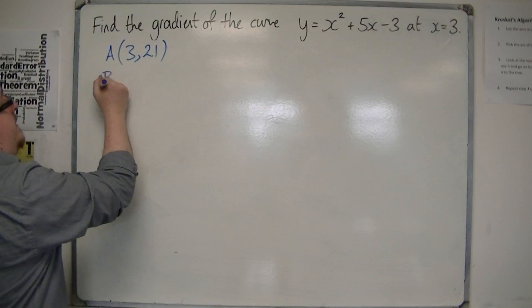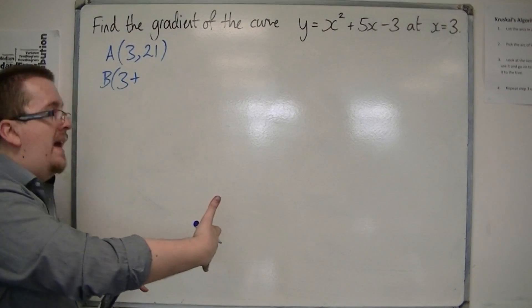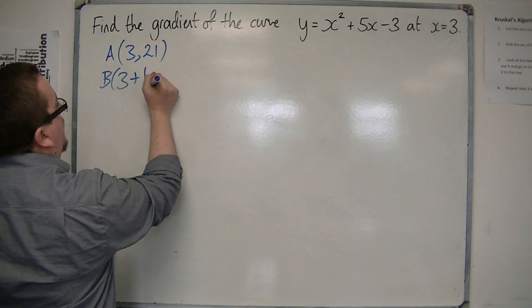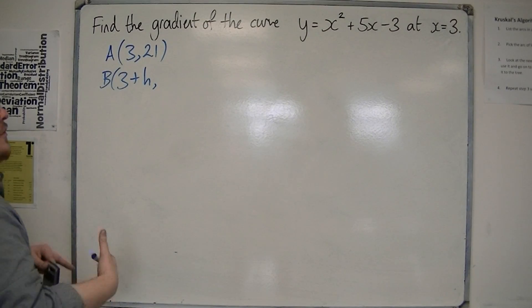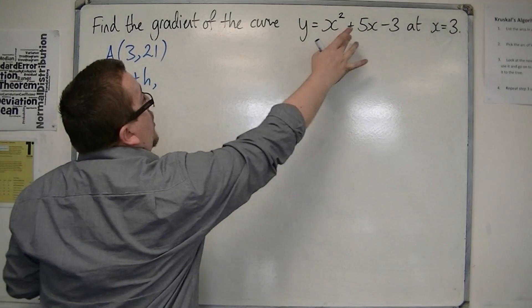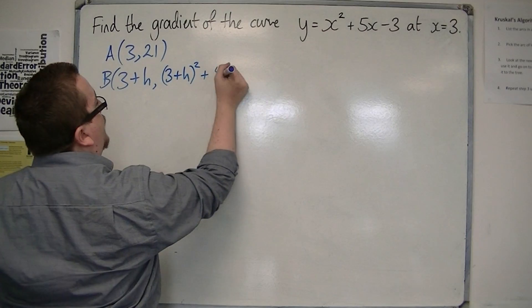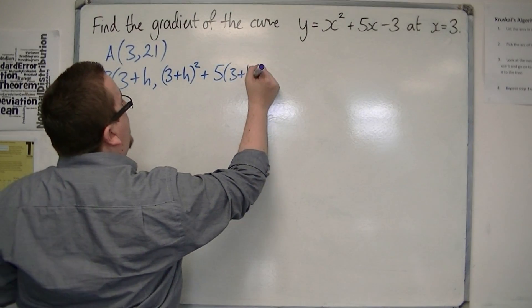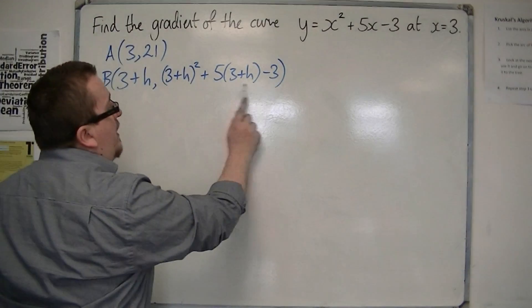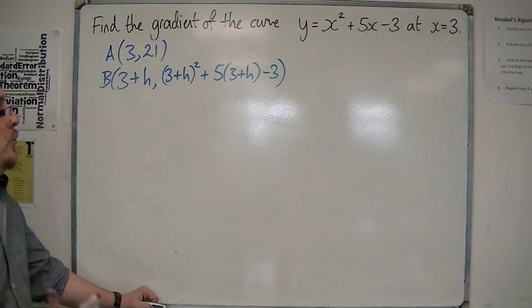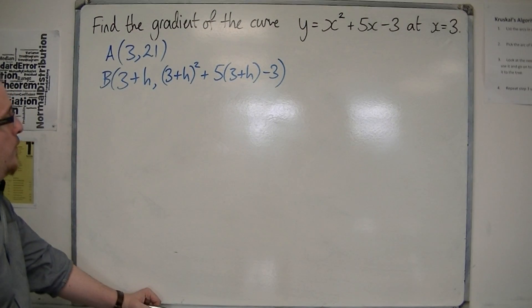The second coordinate, B, will be a little distance away from that x-coordinate of 3, so let's call that h. So we need to find the y-coordinate of B. So the y-coordinate B will be substituting 3 plus h into this. So 3 plus h squared plus 5 lots of 3 plus h minus 3. So I want to evaluate this, expand it, because in its current format it's quite a nuisance. It's not very easy to work with.